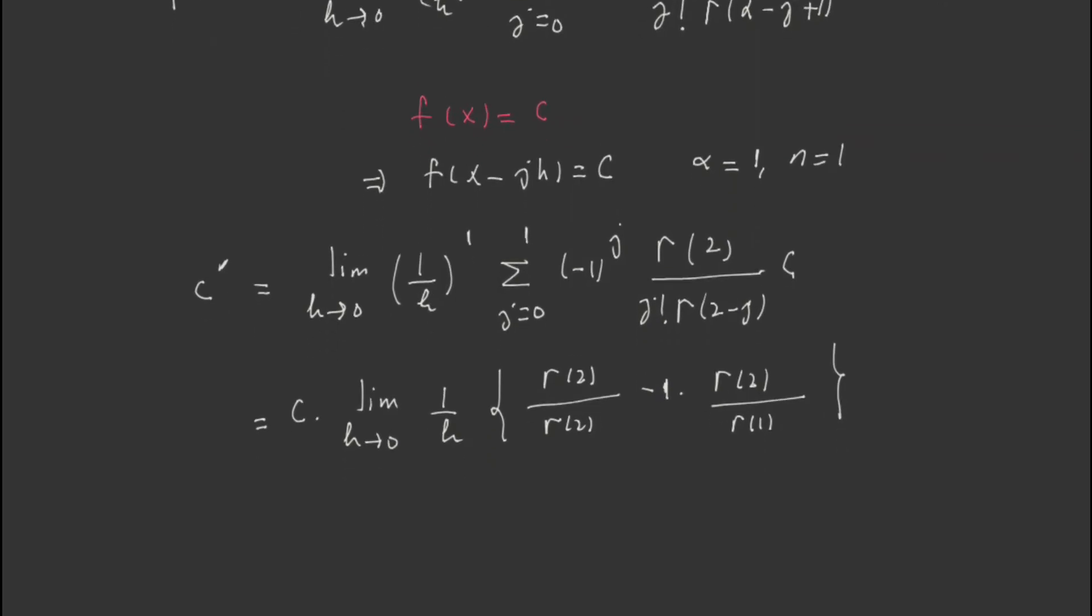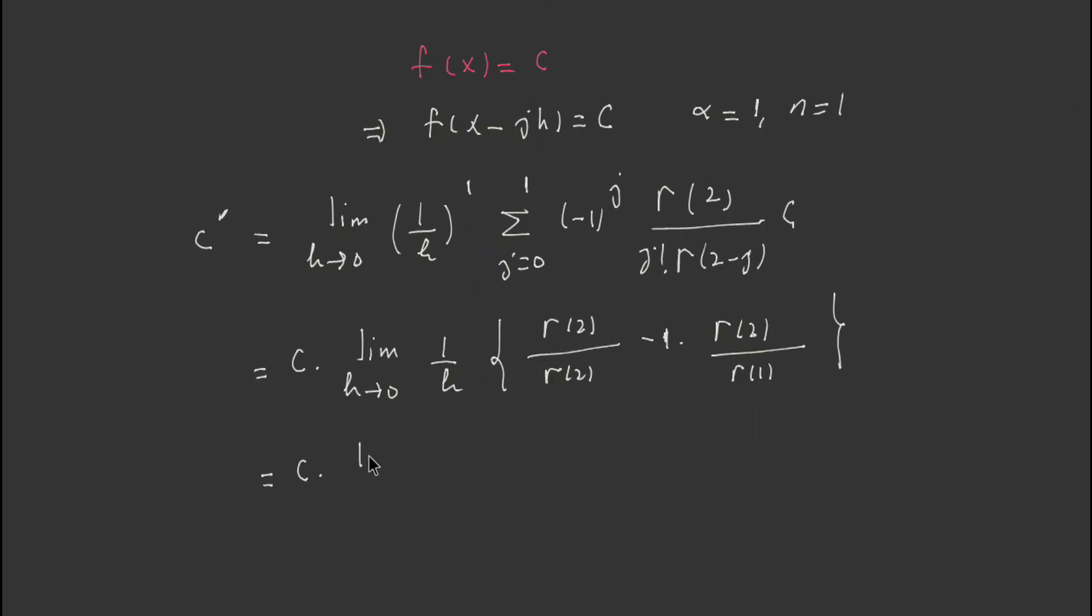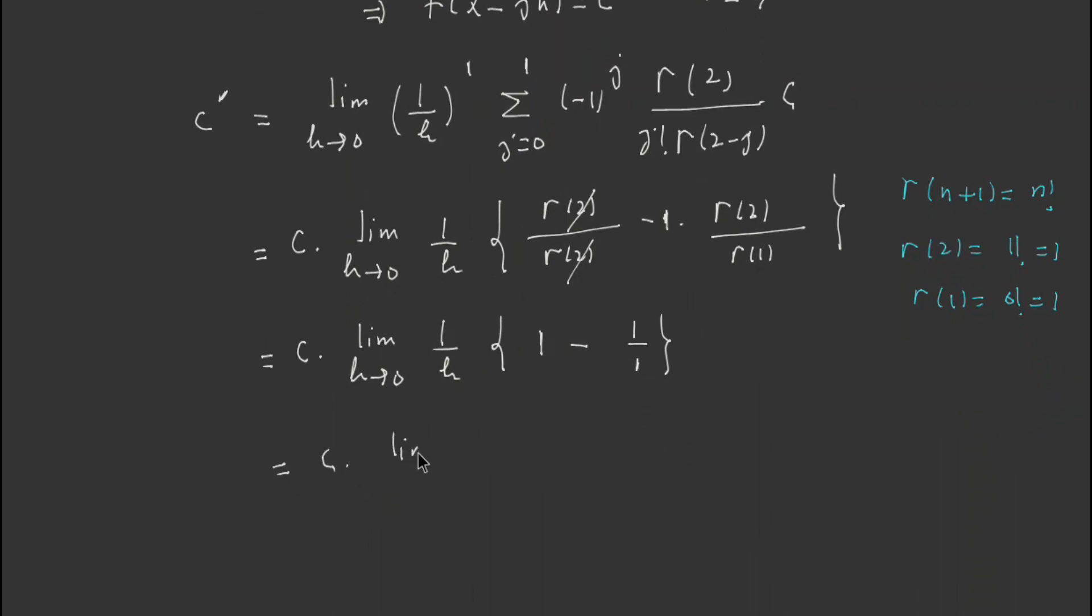Now c limit h tends to 0, 1 over h, gamma of 2. As we know that gamma n plus 1 is n factorial, which means gamma of 2 is 1 factorial which is 1, and gamma of 1 is 0 factorial which is again 1. So gamma 2 and 2 they cancel, so I am left with 1, and negative gamma 2 is 1, gamma 1 is again 1.